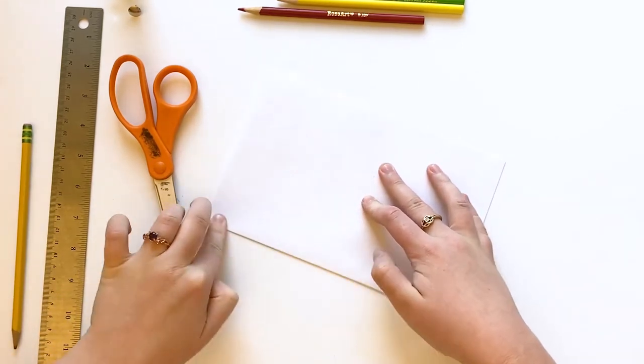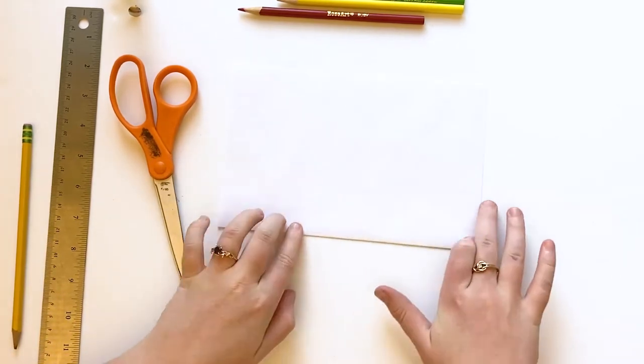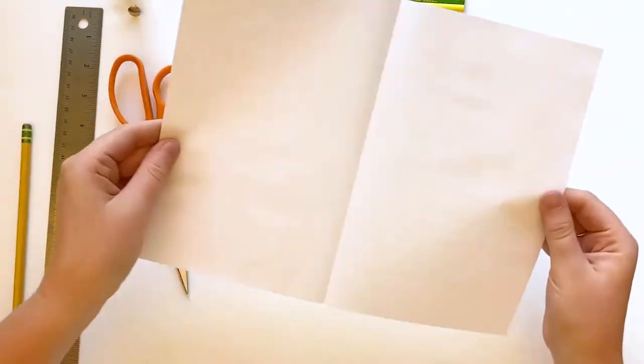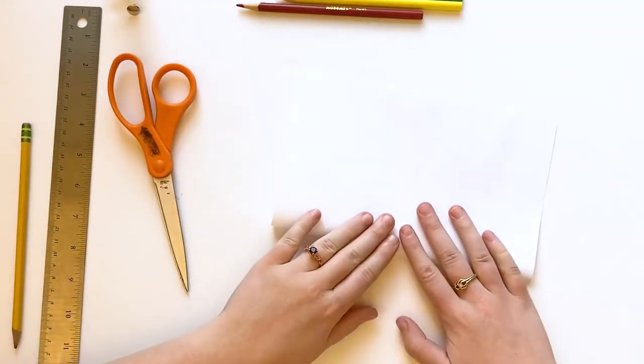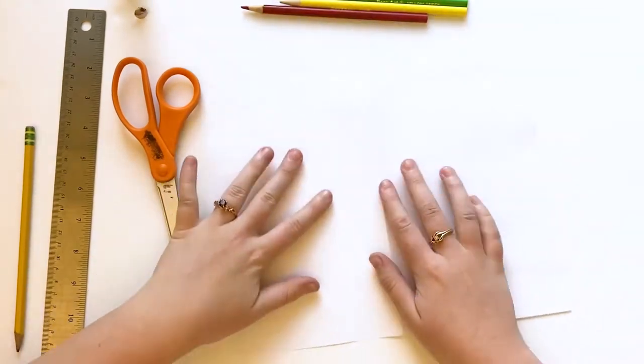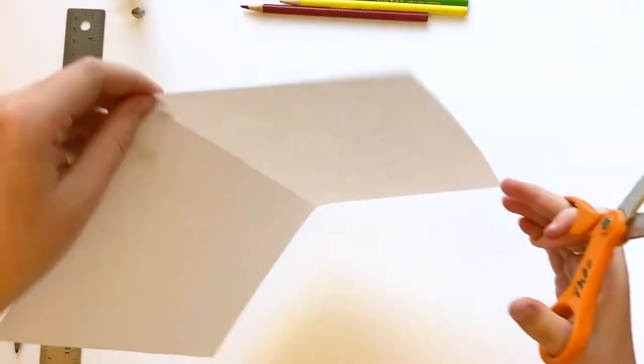Fold the paper in half connecting the short sides together, then flip over and fold in half again for a sharp crease. Use scissors to cut along the center line.